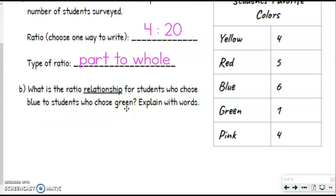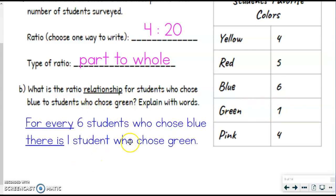For the students who chose blue to students who chose green. So we're going to say for every, and then they said for students who choose blue. So there were six. So for every six students that chose blue, there are, or possibly is, because it says students who chose green is one. So we're going to say for every six students who chose blue, there is one student who chose green.